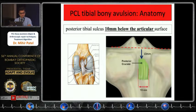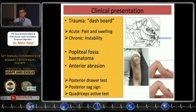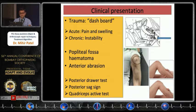Relevant anatomy: the PCL inserts 10 millimeters distal to the articular surface behind the tibia, which is relevant when picking up these fractures on X-rays and CT scans. It is typically a dashboard injury where a posterior-directed force comes onto the tibia when flexed to 90 degrees. These patients will have anterior abrasion of the knee, and on examination they will have posterior instability signs: the posterior drawer, posterior sag, and quadriceps active test.